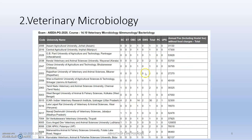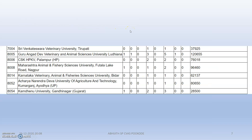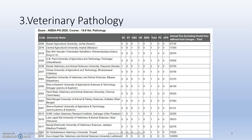Moving to the microbiology stream. Next is veterinary pathology — this is an important course and many people have the main preference for pathology. You can see that ICAR code 5015 is IVRI, and the fee is very less — ₹32,300.